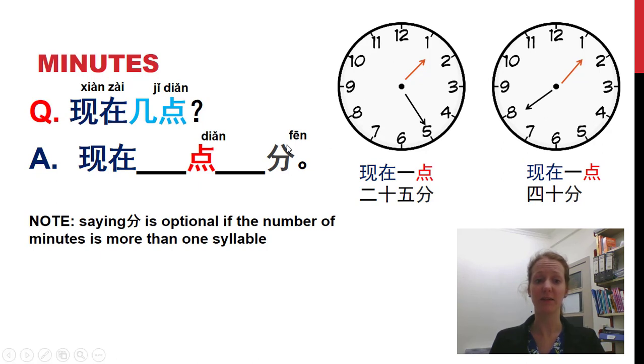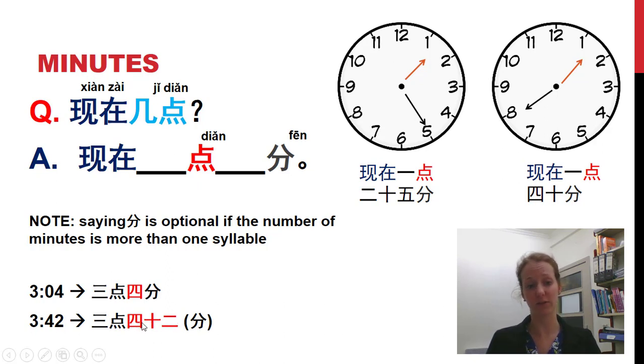Take note here that saying 分 is optional if the number of minutes is more than one syllable. For example, 3:04, 三點四分. So the number of minutes, 四, four minutes past three, is only one syllable. So we have to use 分. However, if we were saying 3:42, 三點四十二, we don't need to use 分, because the number of minutes how we say it is more than one syllable. Generally, they don't say it. 三點四十二.